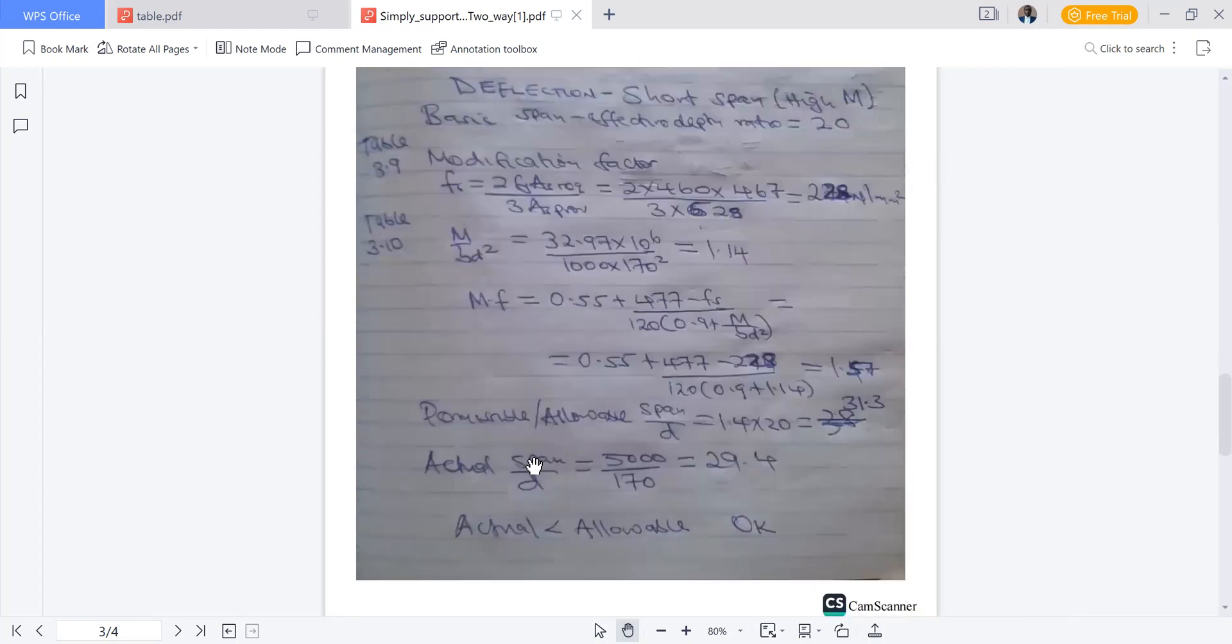Permissible or allowable span over effective depth is modification factor 1.57 multiplied by 20, we get 31.3. Actual span over effective depth is 500 divided by 170, we get 29.4. Since 29.4 is less than allowable 31.3, we say it is okay.